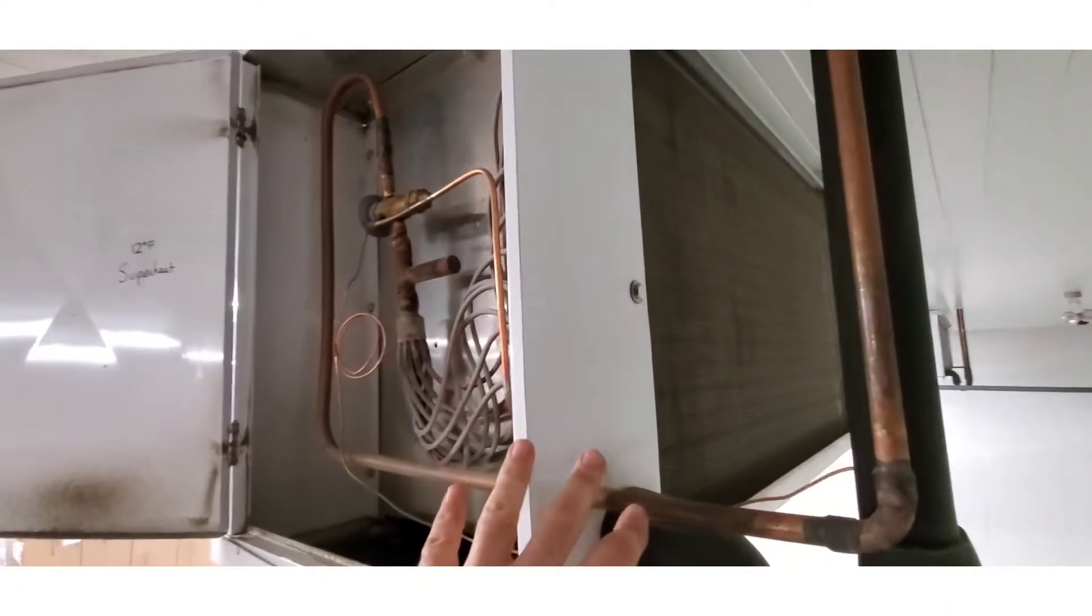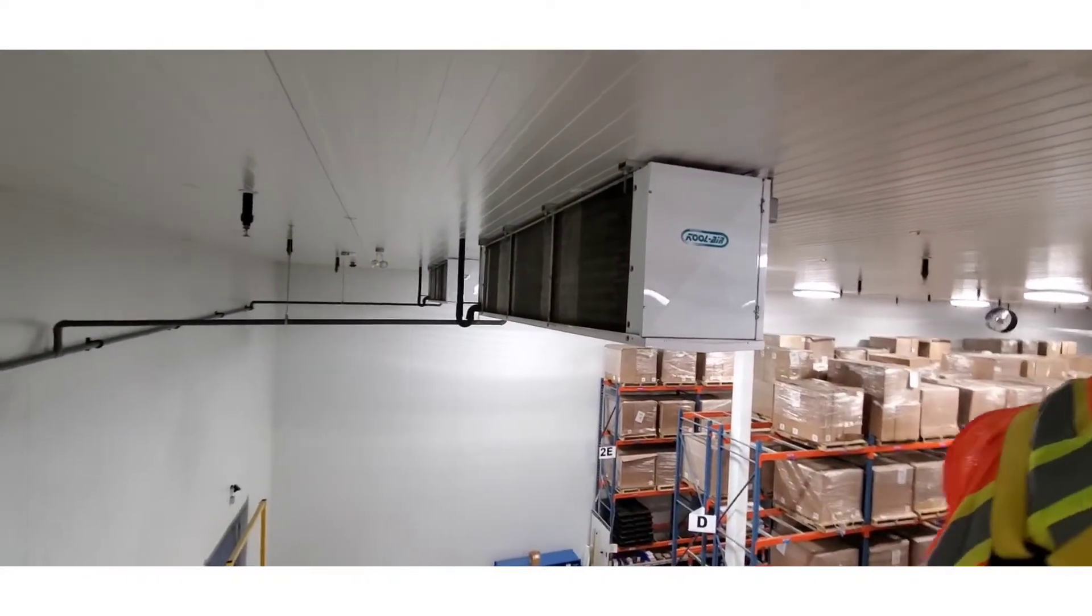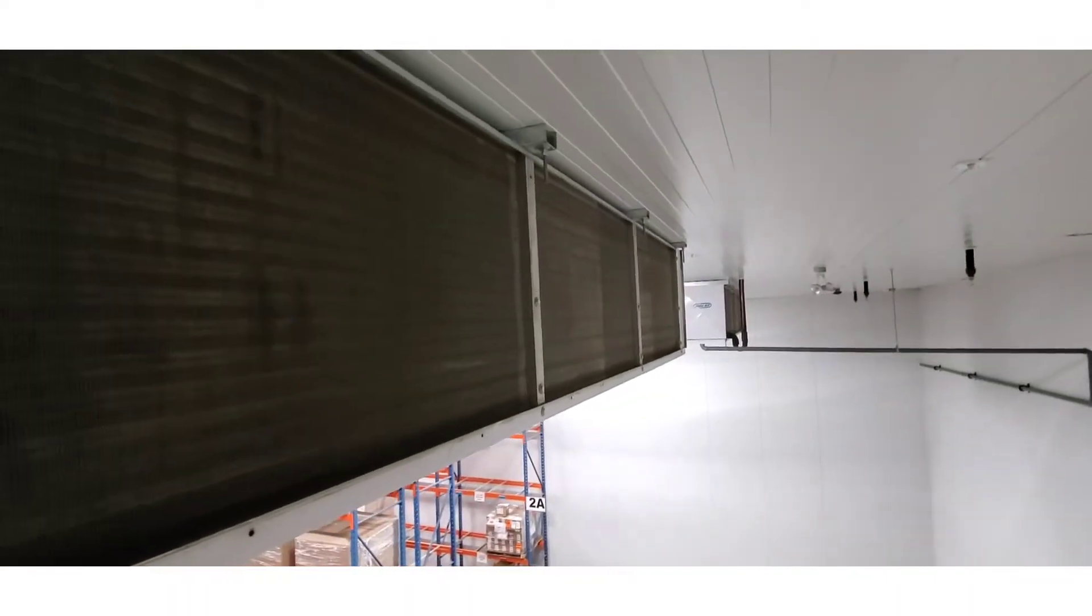Now this evaporator here is used in conjunction with that first evaporator over there. There's two condensing units on the roof. There's two evaporators per.